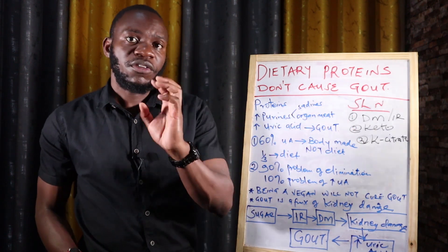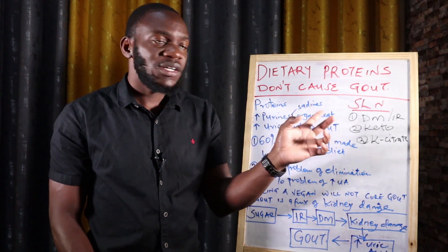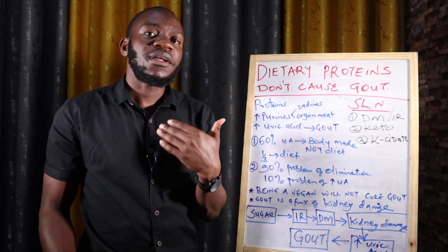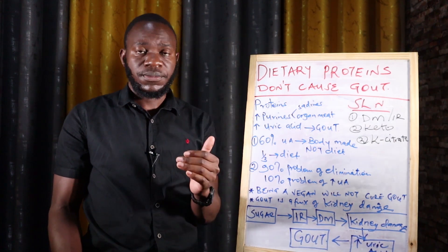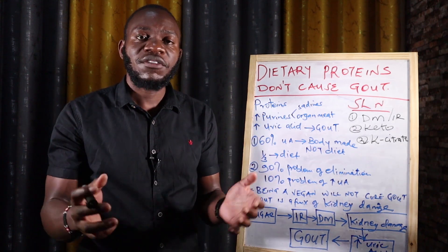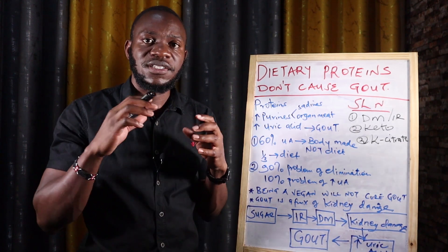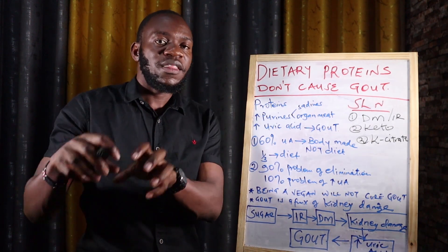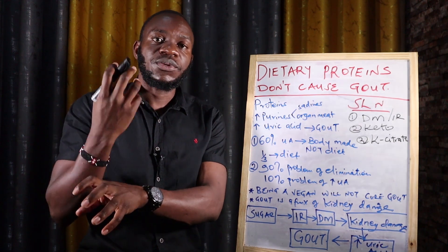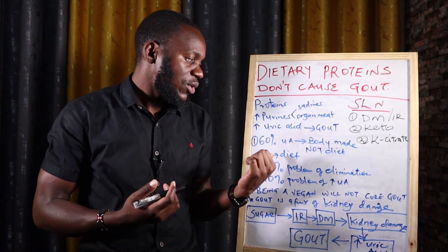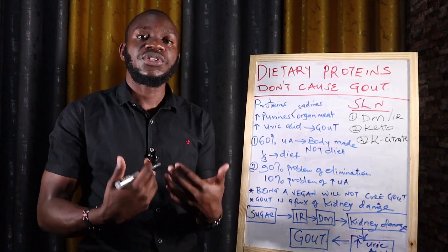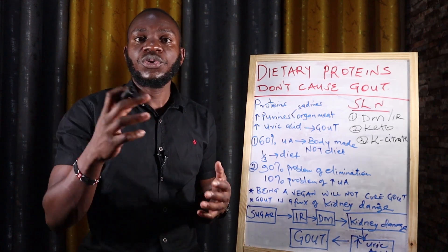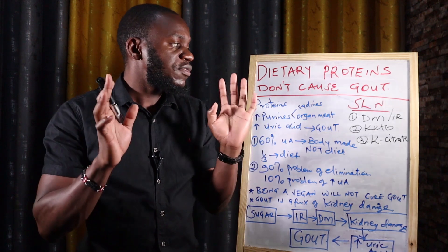When you start eating healthy keto diets and fasting, there will be an initial increase in uric acid in your system. Ask yourself why uric acid rises even when you are not consuming proteins — that tells you there is another mechanism producing uric acid. This confirms that 60% of uric acid is endogenous; you do not need dietary protein to produce it. Your own body makes it.